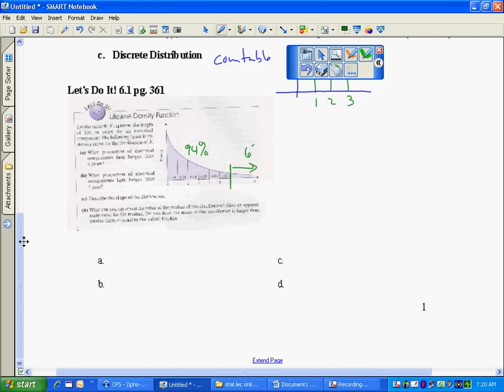What proportion lasts longer than one year? Well, one year is in this position, and that's 39%. So 61% lasts longer than one year.